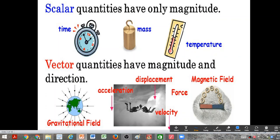That's why the gravitational force is a vector. Acceleration, velocity, displacement, force, magnetic field - all of them have directions and hence they are known as vectors.